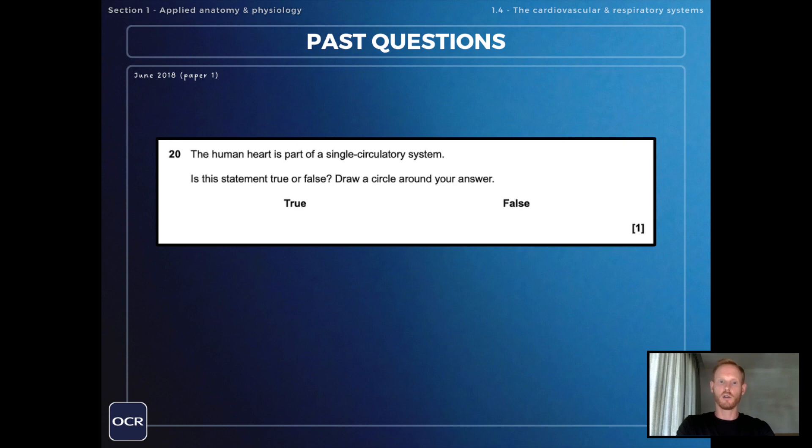Finally, the human heart is part of a single circulatory system. Is this statement true or false? Draw a circle around your answer. And this is of course false because the human heart is part of a double circulatory system consisting of systemic and pulmonary circuits.